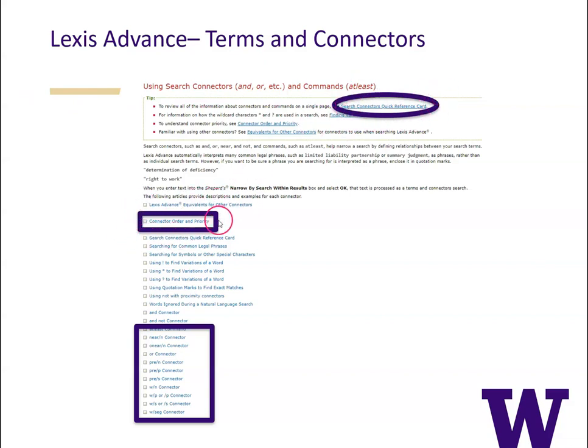I also recommend reading the connector order and priority link here because that's going to give you some additional information about how Lexis orders connectors and how it determines the priority of those connectors. In the box below I highlighted the common connectors used in Lexis and there are links to more information and examples there. Basically, if you know how connectors work and which ones are available, you'll be a far more efficient researcher, which when you find yourself practicing law for real might lead to fewer late nights in the office finishing research for motions you might be writing for senior attorneys.